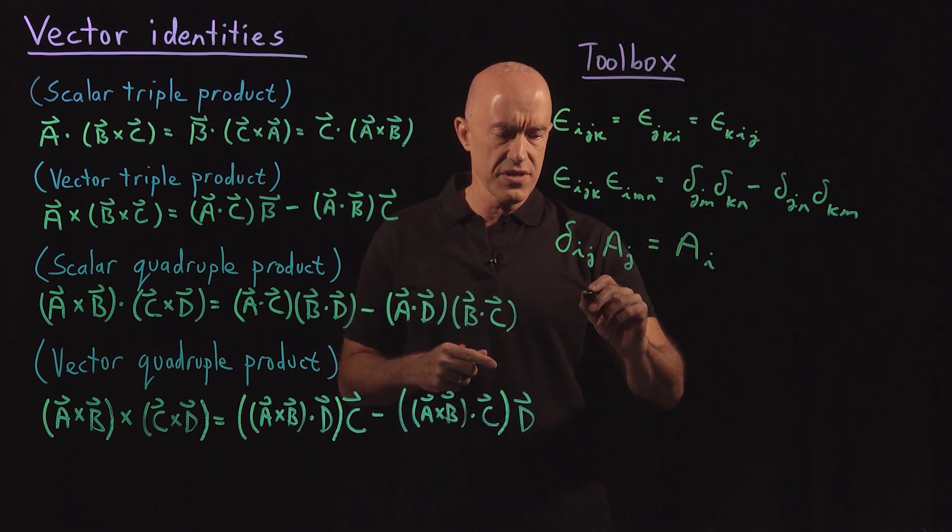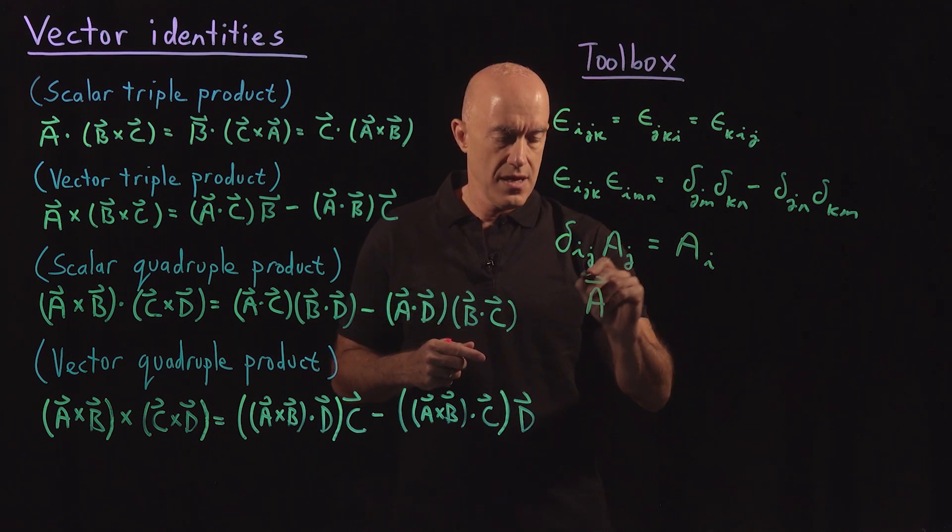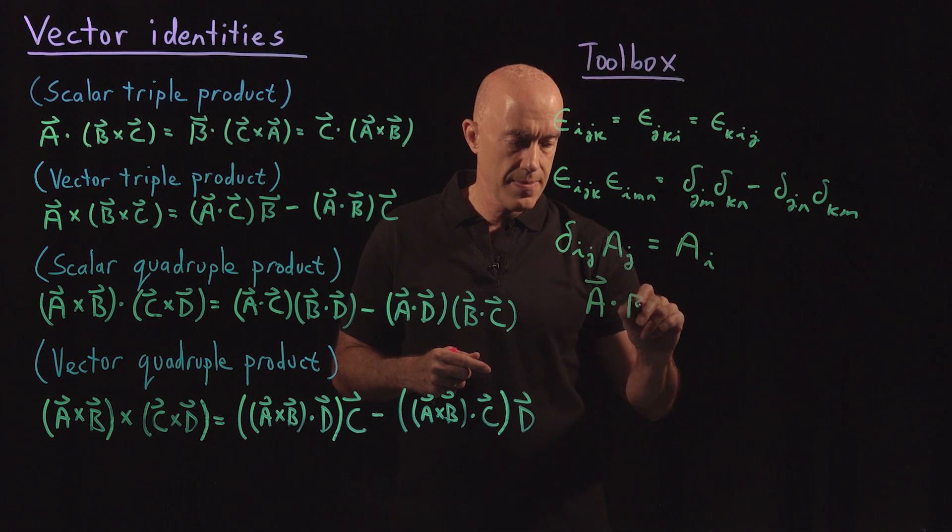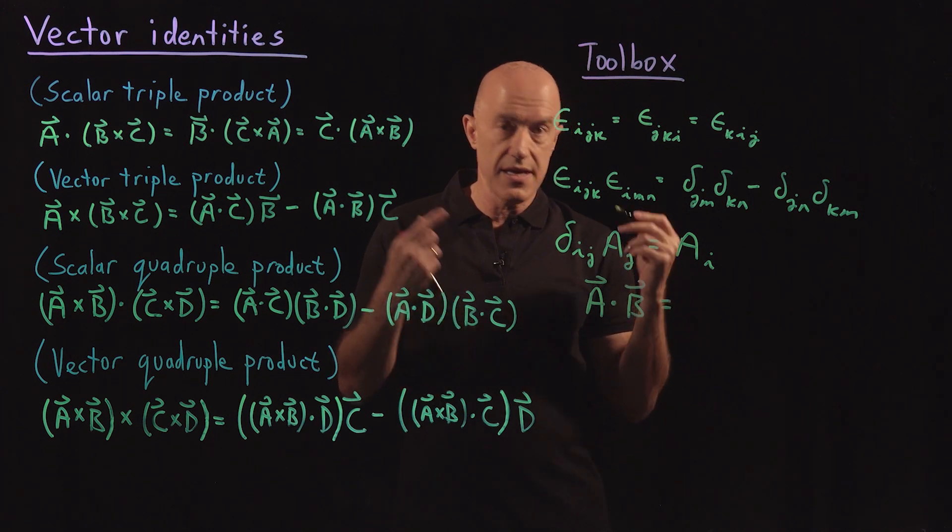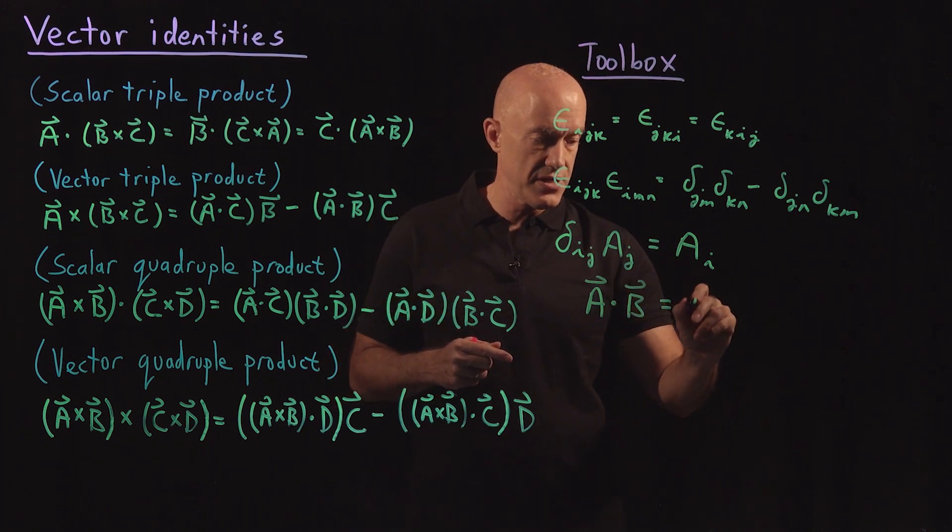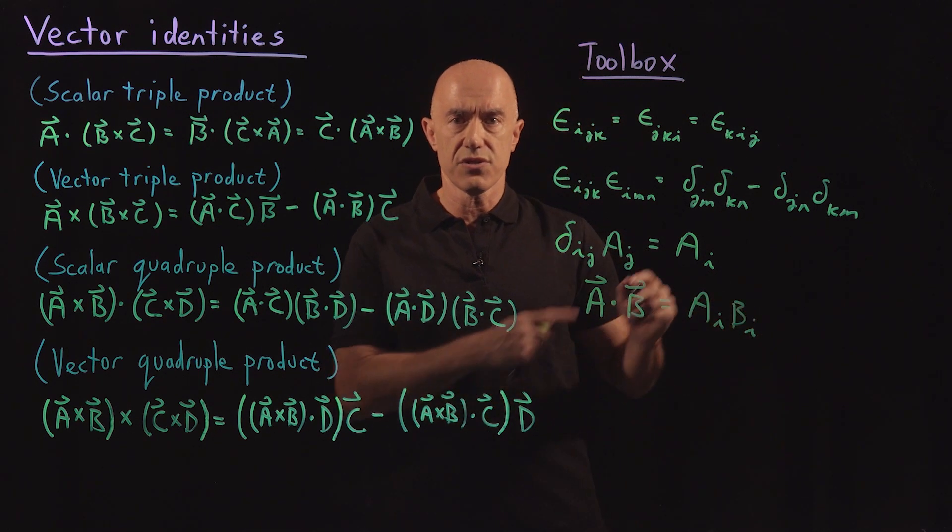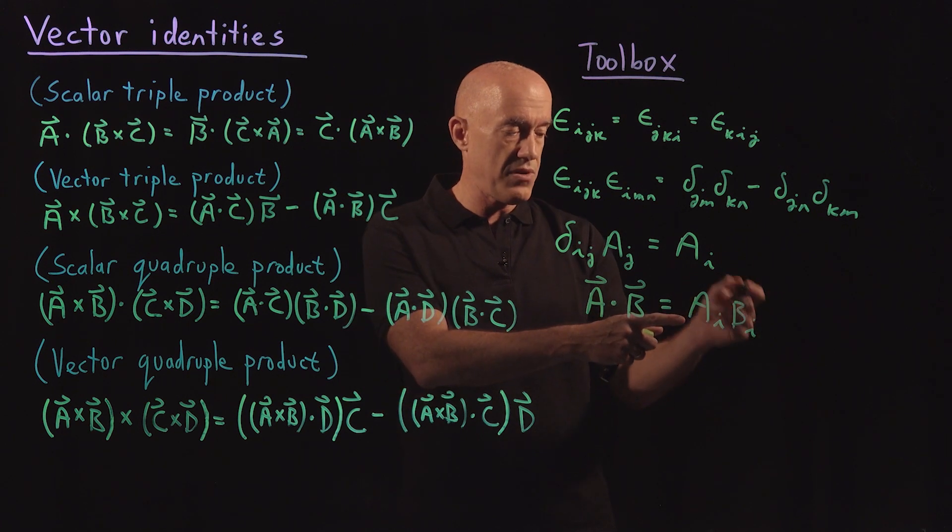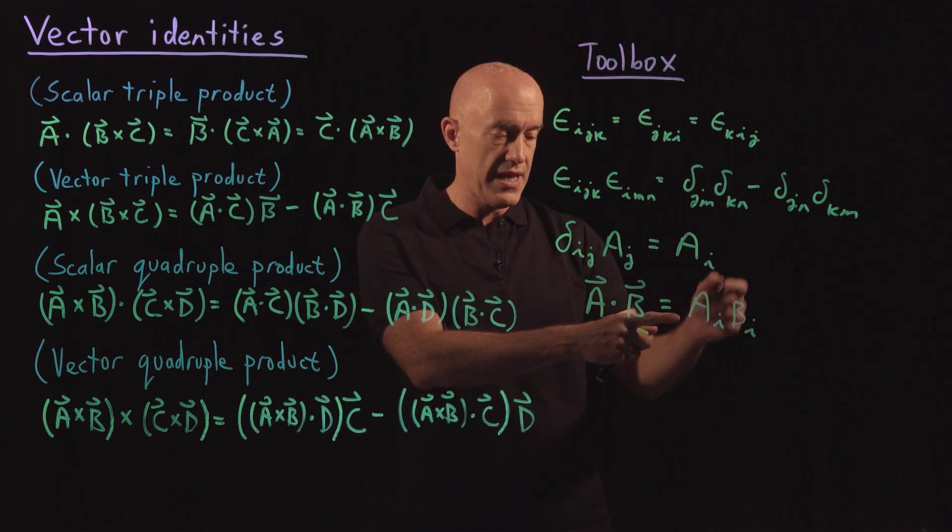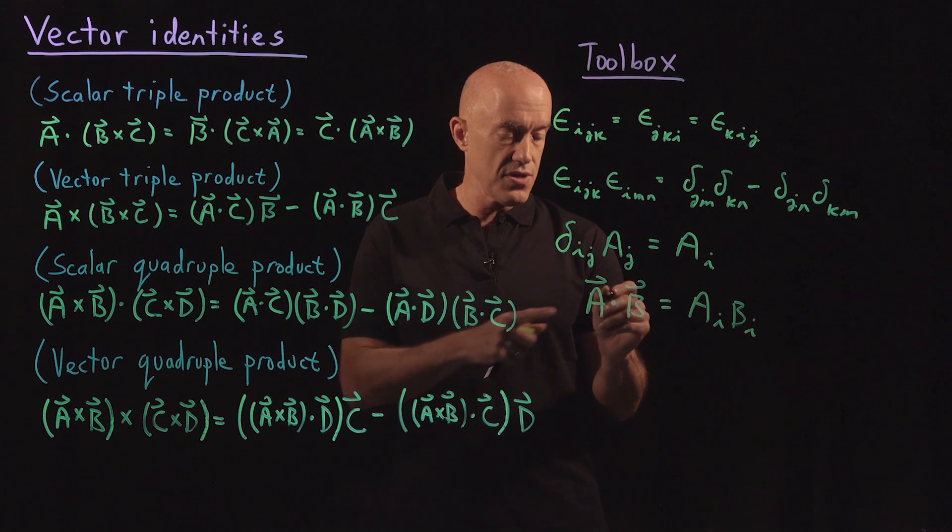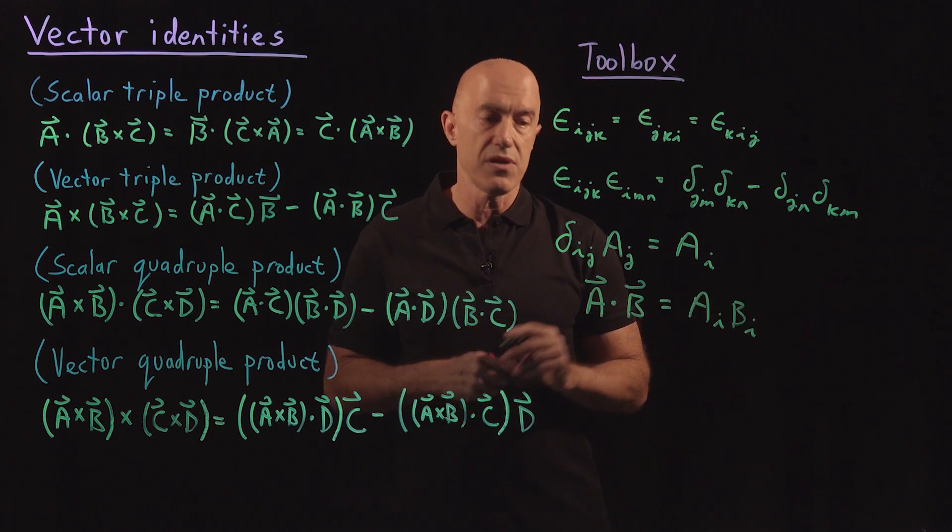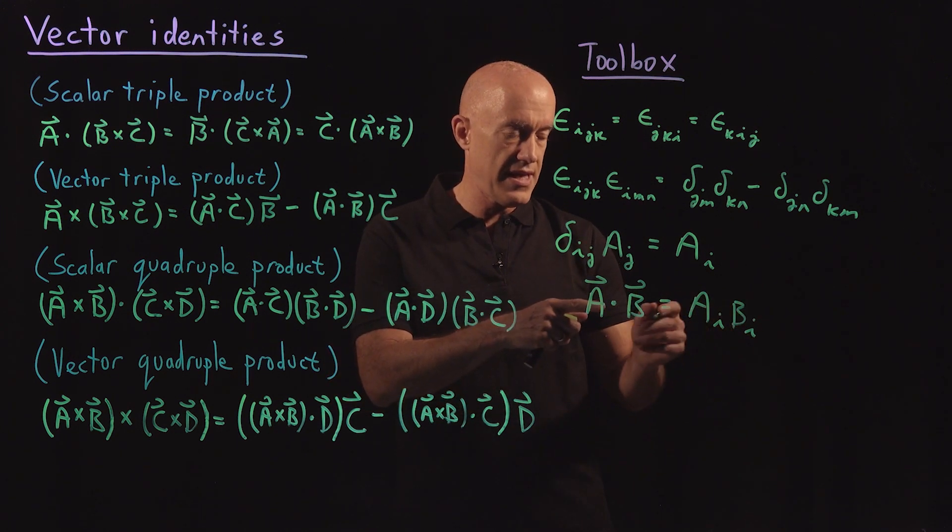Finally, what I've talked about already, we can write a dot b using the Einstein summation convention as just a_i b_i, so sum over i, so a1 b1 plus a2 b2 plus a3 b3. So the dot product can be written in terms of these index symbols.